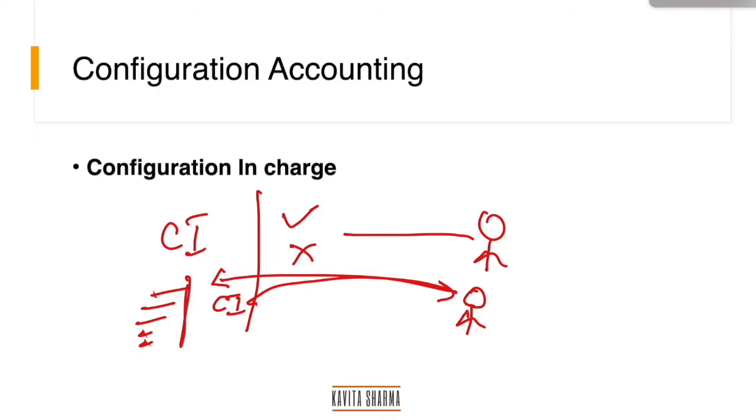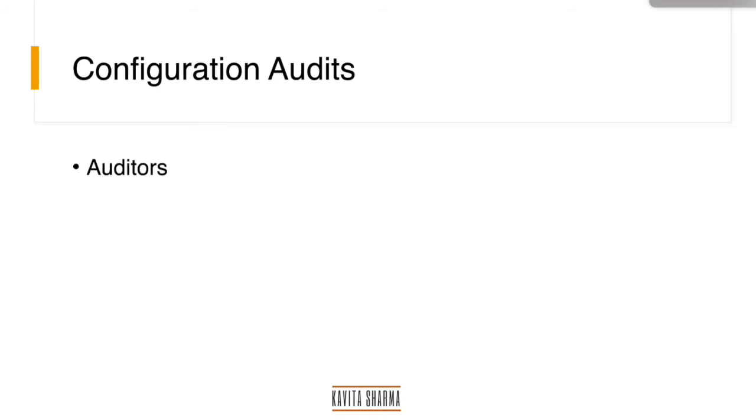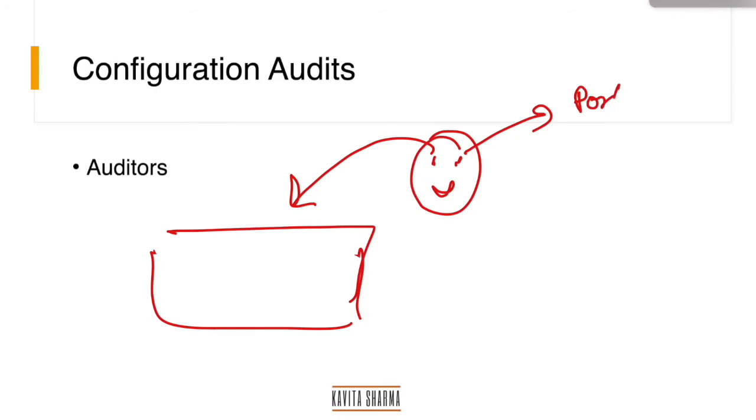So this is configuration accounting. Audits: third set of eyes comes and checks what's going on in your project. These set of eyes give report to portfolio manager to ensure, to tell them what is going on in your project.